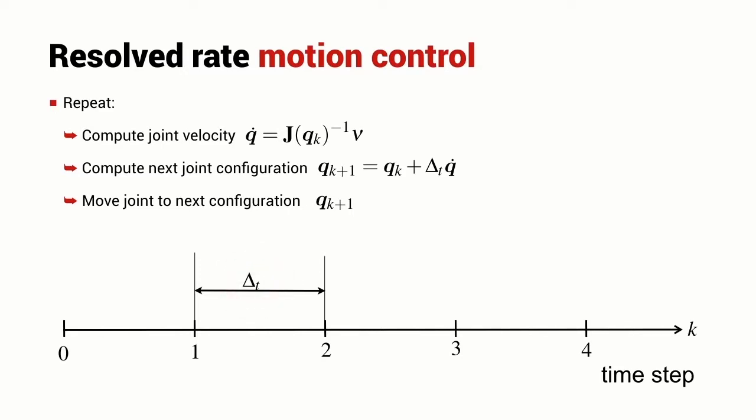So at time step k, I would take the joint angles measured at time k, I'd compute the Jacobian, invert it, multiply it by the desired spatial velocity and determine the joint angle velocity that I need to achieve. If I multiply the joint velocity by the time interval delta t, then I obtain the change in joint angles over that time step. I add it to the current set of joint angles and I end up with the set of joint angles that I need to have at the next time step, at time k plus 1. And then I tell my robot to move to that new set of joint angles and I repeat the process.